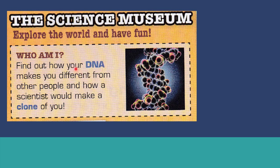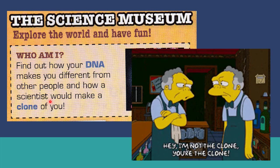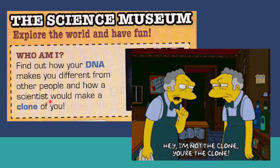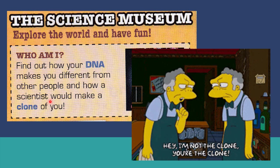My DNA and your DNA is different. DNA is the thing that makes your hair colour and your eye colour different. And then, how a scientist would make a clone of you — if a scientist wants to make an exact copy of you, they need to use your DNA.